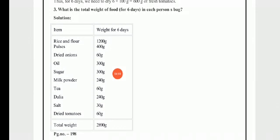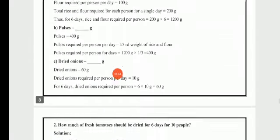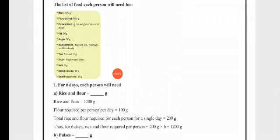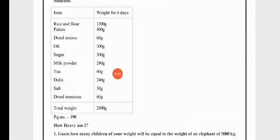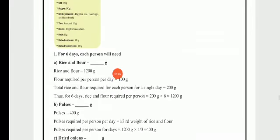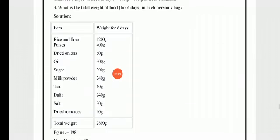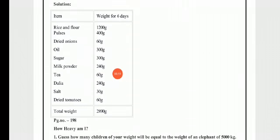For the remaining items, we multiply each measurement by 6, since the list gives 1-day quantities and we need 6-day quantities. For example, oil: 50 × 6 = 300 grams; sugar: 50 × 6 = 300 grams. All remaining materials are multiplied by 6, and the total weight comes to 2,890 grams.